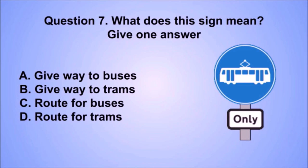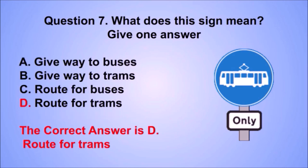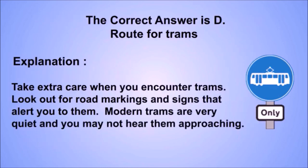Question 7. What does this sign mean? The correct answer is D: Route for trams. Take extra care when you encounter trams. Look out for road markings and signs that alert you to them. Modern trams are very quiet and you may not hear them approaching.